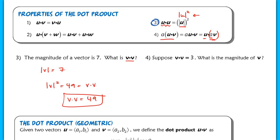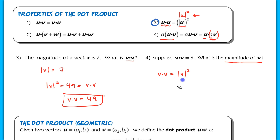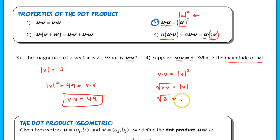Example 4 is similar. Suppose v·v = 3 — what is the magnitude of v? We know that v·v = |v|², so if we isolate the magnitude by taking the square root of both sides, we get |v| = √(v·v) = √3. So the magnitude of v equals √3.